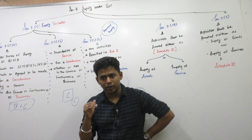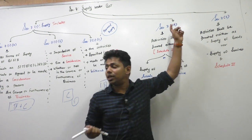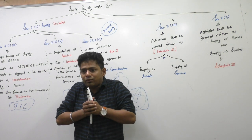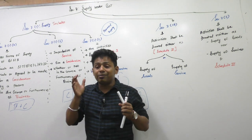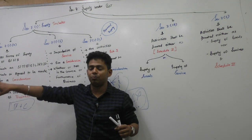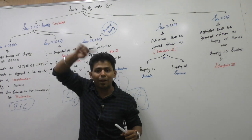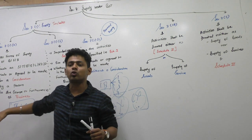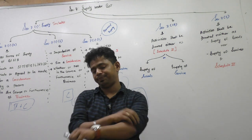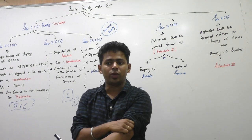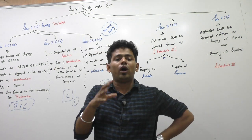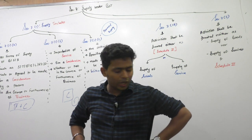And because that 'both' creates a problem, Section 7(1)(a) — whenever these two activities come together, goods and service, Section 7(1)(a) tries its level best to segregate: you go as goods and you go as a service. Because from Section 10 onwards there is a different law for goods and a different law for service, and we don't have law for both. Whatever you are doing in GST, you have to classify it either in the category of goods or in the category of service. You cannot say it is both.